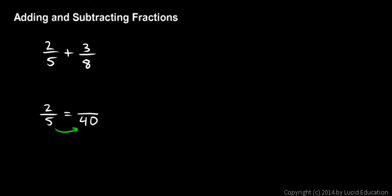So I think to myself, 5 times 8 gives me the 40. So I also multiply the numerator times 8, and 2 times 8 is 16. So 2 fifths is equivalent to 16 over 40.